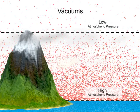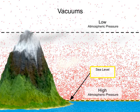The maximum force available from a vacuum is dependent on the barometric pressure at its location. At sea level, the barometric pressure is about 14.7 pounds per square inch under standard conditions.